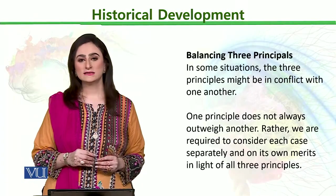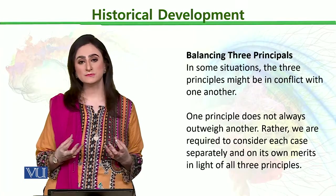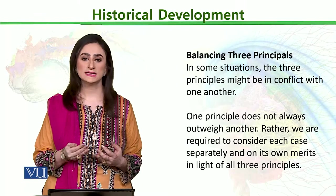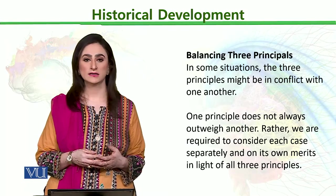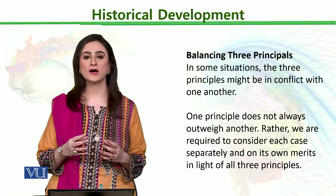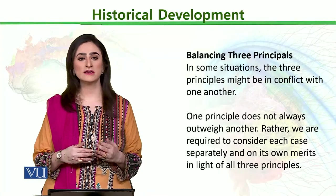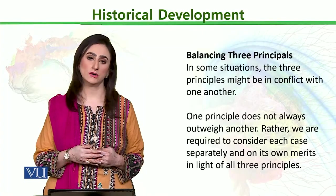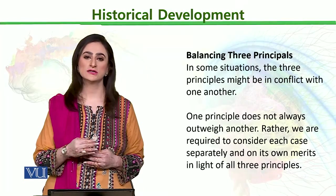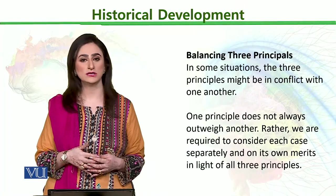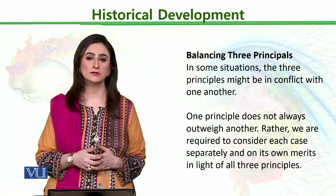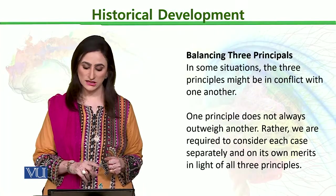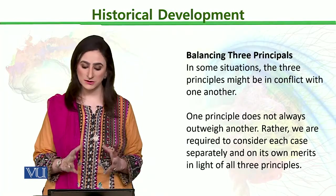Now the important thing is how we are going to balance all three principles: principle one, which talks about respect; principle two, beneficence, which addresses the risk-benefit ratio; and principle three, which addresses justice. There may be situations where we need to see how to balance all three — if we look at risk-benefit, perhaps respect is being compromised somewhere, or justice is being compromised. One principle does not always outwit the other; we have to balance between all three.